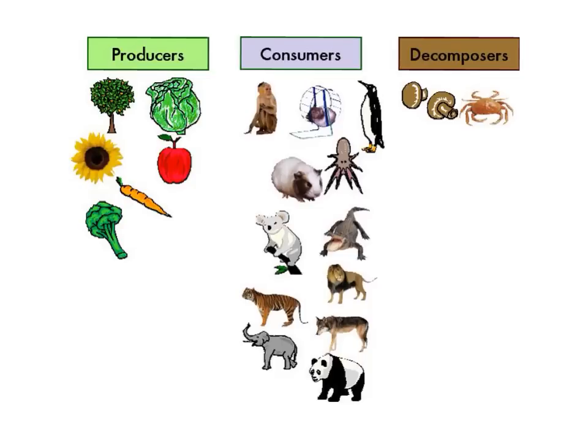To review: every ecosystem is made up of producers, consumers, and decomposers. Plants are the producers because they produce their own food. They do this by using light energy from the sun, carbon dioxide from the air, and water from the soil to produce food in the form of glucose or sugar. This process is called photosynthesis. Carrots, trees, and sunflowers are examples of producers.